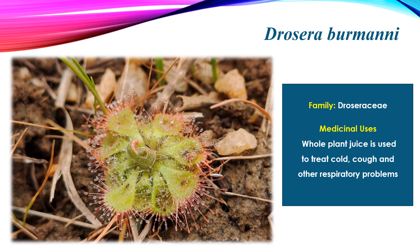Next is Drosera burmannii, which is a carnivorous plant found in wetlands and marshy areas. It belongs to the family Droseraceae. The whole plant juice is used to treat cold, cough, and other respiratory problems.